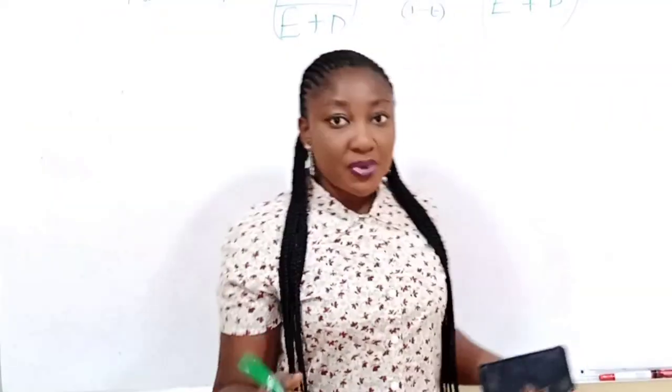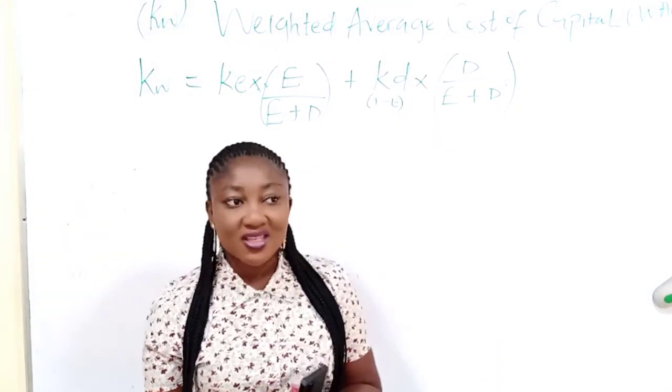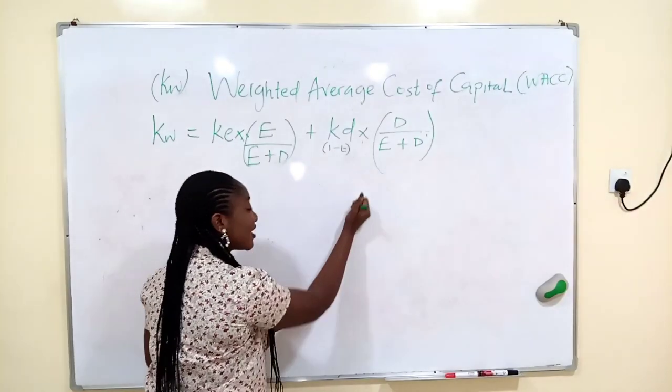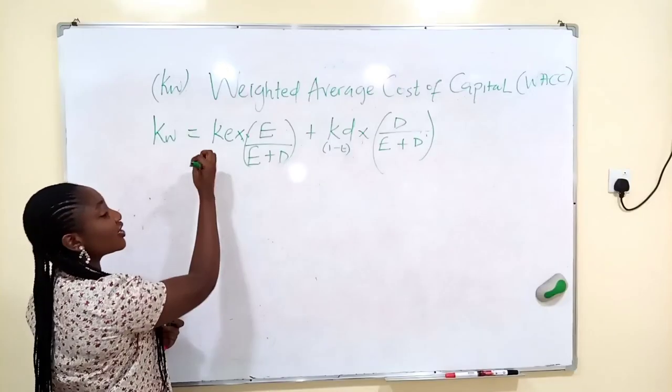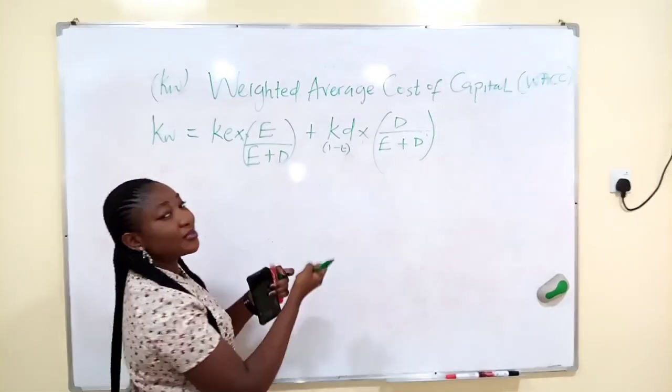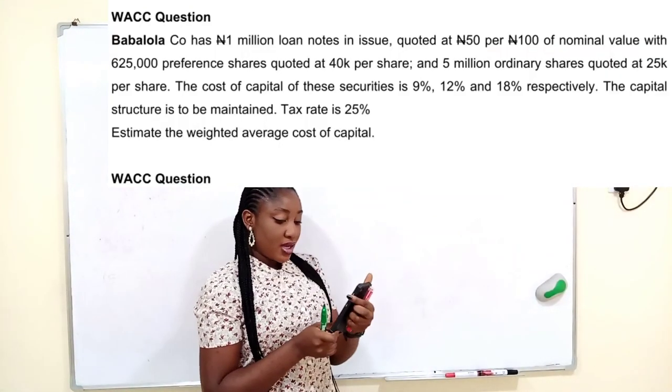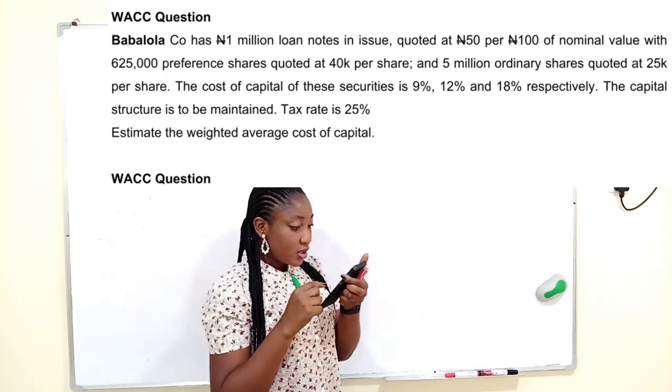You multiply the cost of equity by the weight of equity in the total capital, and multiply the cost of debt by the weight of debt in the total capital. You use weighted average cost of capital to discount projects, to discount an investment opportunity.